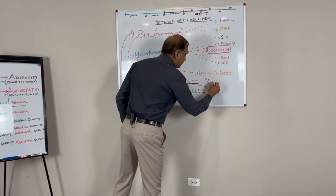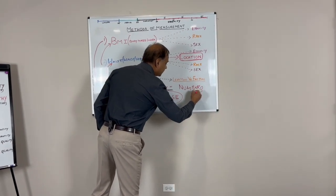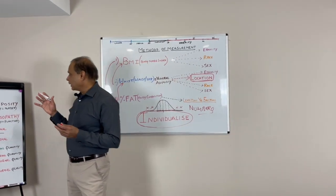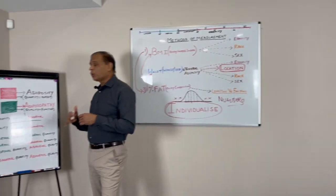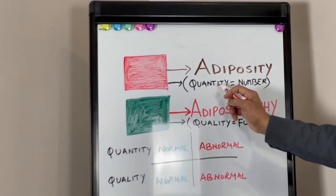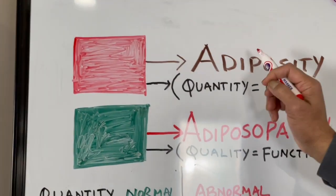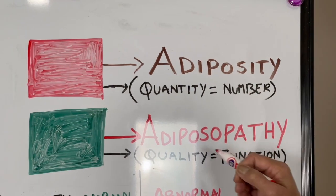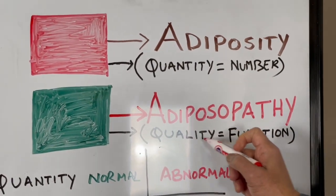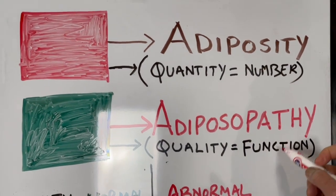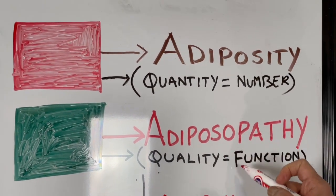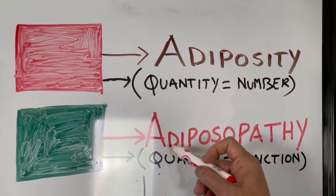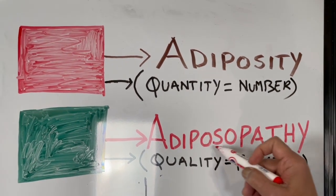Now I'm introducing one more important concept: quality. A number is quantity. If we talk about fat number, I'm introducing a new term called adiposity—it is a quantity or number. Whereas quality is function. The function of any particular organ or how it's working is determined by quality. If there's dysfunction, we call it adiposopathy, which is the problem with all the pathology and clinical problems we encounter.